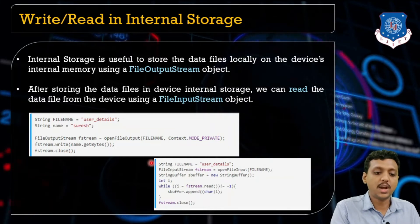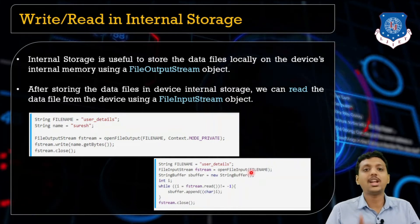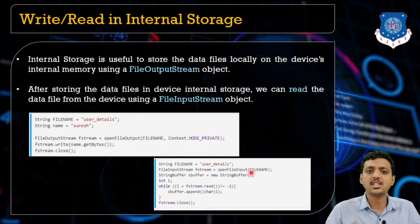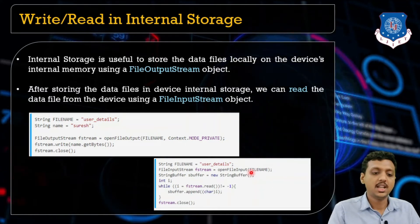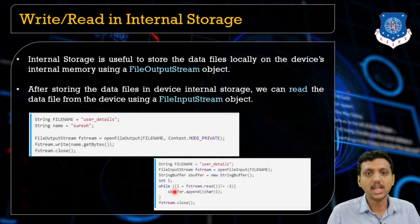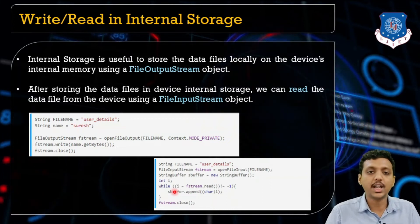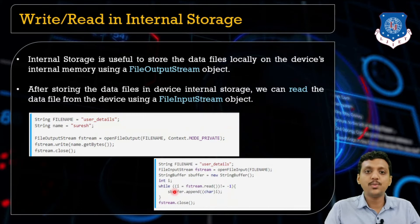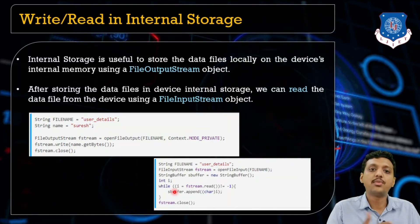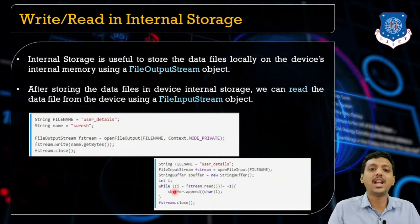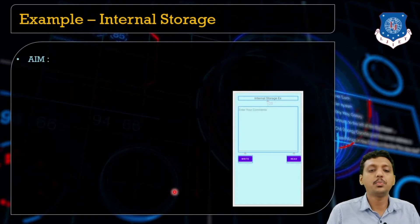To read something you need a FileInputStream. You can get data character by character using a BufferedReader, StringBuffer, or StringBuilder — there are many options. Here we use a StringBuffer, get the data character by character, and append each character. Do not forget to close your input stream. This is just standard Java file handling using FileOutputStream and FileInputStream.